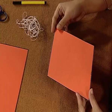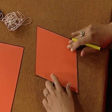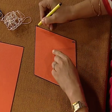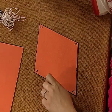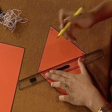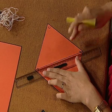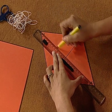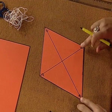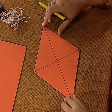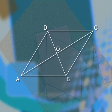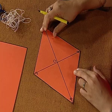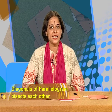Let us start with a parallelogram. We have a parallelogram with us. We will name this parallelogram as ABCD. First of all, we will draw diagonals. We will join the vertices B and D, and A and C. BD and AC are the two diagonals of the parallelogram ABCD. The diagonals of a parallelogram intersect at a point O.